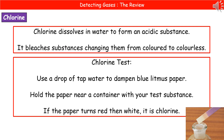Our second gas to test for is chlorine. When chlorine dissolves in water, it forms an acidic substance and it bleaches substances, changing them from a coloured compound to a colourless one. Using that knowledge, we reveal the chlorine test, which uses an indicator paper called litmus paper — specifically blue litmus paper.